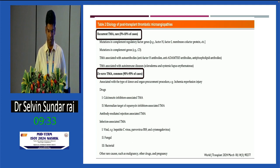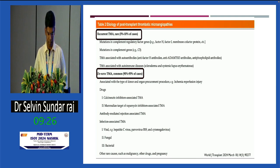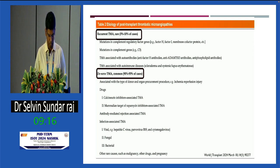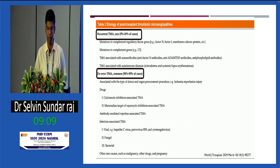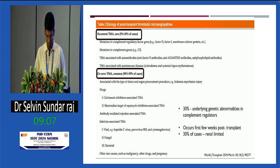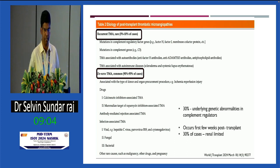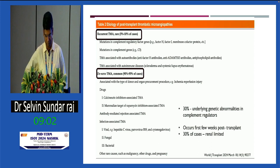Recurrent TMA is mostly secondary to complement regulatory factor gene mutations, or it can be associated with complement gene C3 mutations, autoantibodies like anti-factor H antibodies, or autoimmune diseases. De novo TMA most commonly results from ischemia-reperfusion injury, and can also be due to drugs, rejection, and infections. Common infections include parvovirus, cytomegalovirus, and hepatitis C virus. An important point: even in de novo TMA patients, around 30% can have genetic abnormalities in complement regulators.